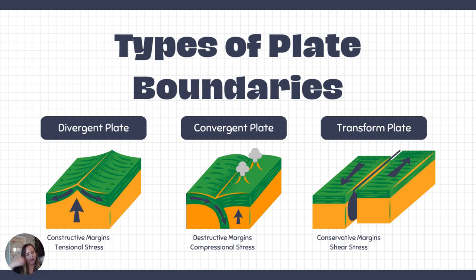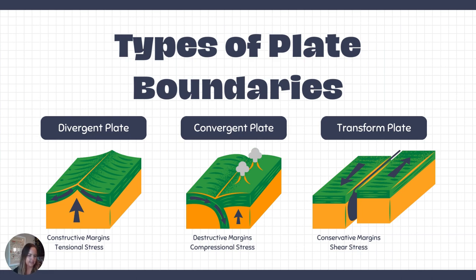Convergent plate boundaries are driven by compression — plates push against each other. We call them destructive margins because as they crush into each other, rocks are destroyed, returned to the mantle, or significantly deformed. At transform plate boundaries, rocks are just sliding past each other — not creating or destroying anything. So we call them conservative margins, and they are driven by shear stress.